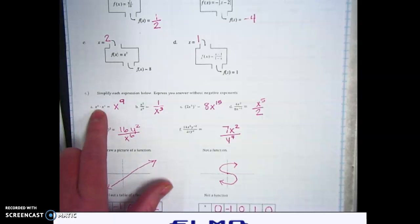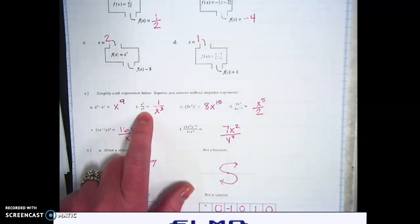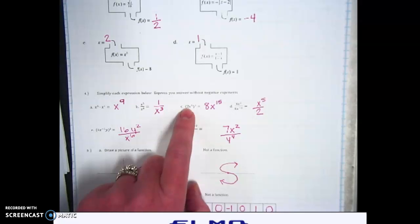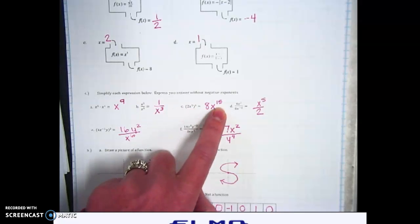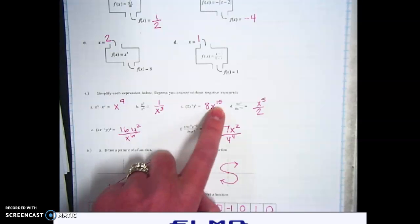Question number 4. You're going to add the exponent, so you'll have x to the 9th. You're going to subtract the exponent, so you're going to have 1 over x to the 3rd. Everything within the parentheses goes to the power of 3, so 2 to the 3rd is 8, x to the 5th to the 3rd is x to the 15th.